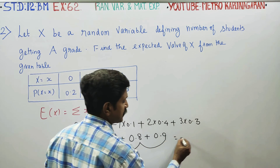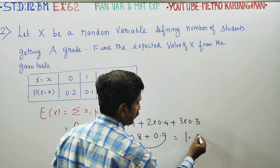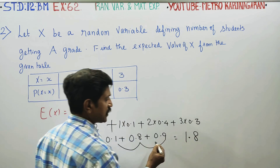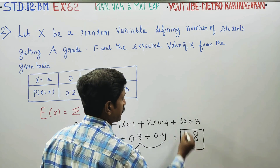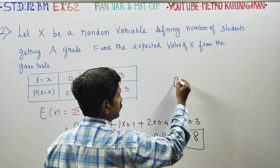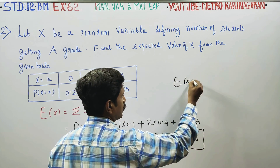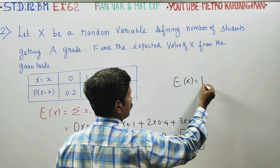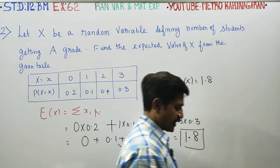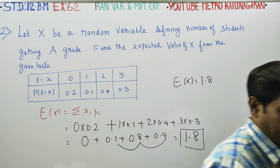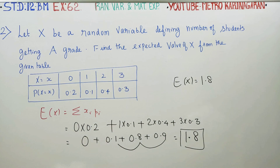The total is 1.8. This is the expected value of the random variable. 1.8 is your answer. Thank you.